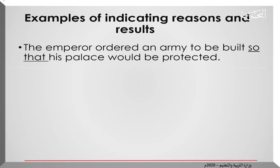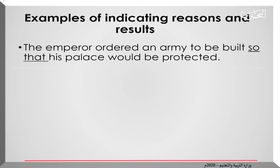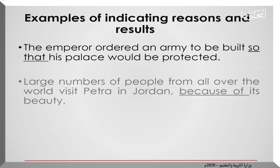The first example: 'The emperor ordered an army to be built so that his palace would be protected.' Pay attention — I could say 'because' instead of 'so that'; it has the same meaning. The reason the emperor ordered the army to be built is because he wants his palace to be protected. So here I'm giving a reason.